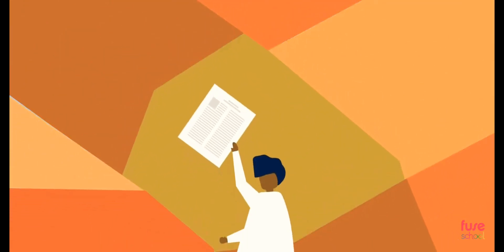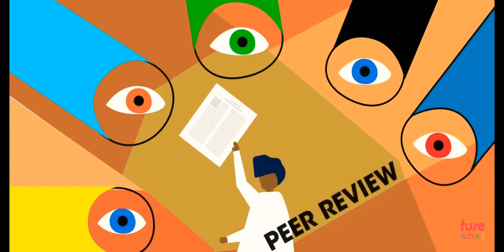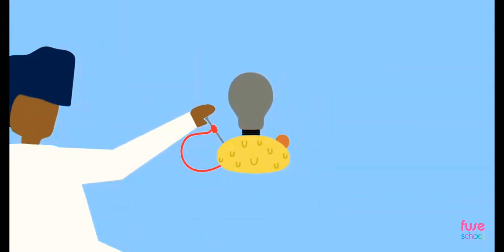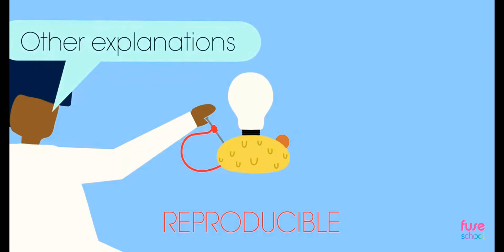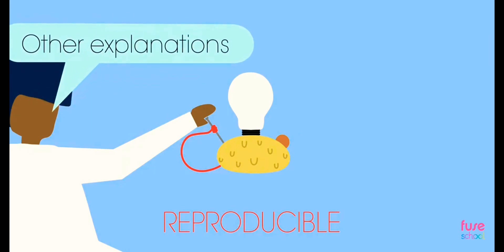When the paper is published, it is then reviewed by other scientists in a process called peer review. This can be an anonymous process. Sometimes other scientists repeat the experiments to ensure the data is reproducible. Sometimes other explanations for findings are suggested.